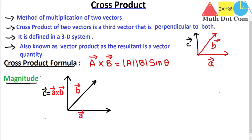To find the length — or magnitude — of the resultant vector, we will consider the area of a parallelogram. If we draw a parallelogram using vectors A and B, the magnitude of the cross product A×B will equal the area of that parallelogram.